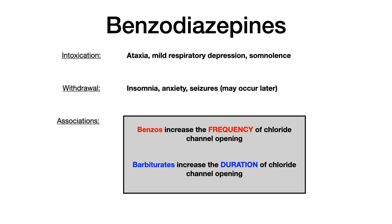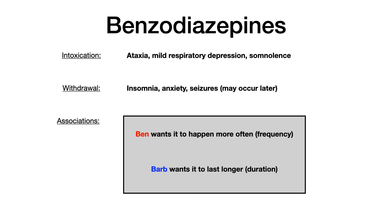For benzos, test writers for USMLE and Comlex love to ask the very subtle difference in mechanism between benzodiazepines and barbiturates. Both benzos and barbiturates affect chloride channel opening, working through and modulating GABA. The difference is that benzos increase the frequency of the chloride channel opening, whereas barbiturates increase the duration of chloride channel opening. The way to remember this: Ben wants it to happen more often, but Barb wants it to last longer.